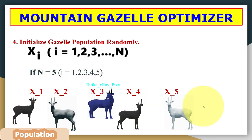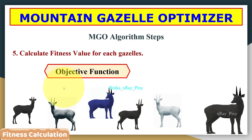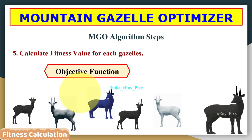Next, we initialize the population of gazelles randomly in the search space. For example, with n equal to five, we have five mountain gazelles: x1 through x5. Using the objective function, we calculate the fitness value for each individual in the current population and then update the best solution — the best gazelle among all based on fitness values.